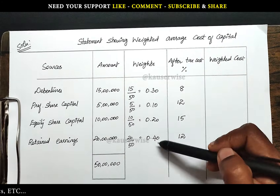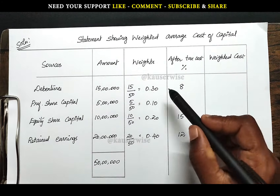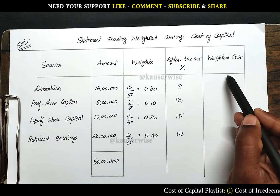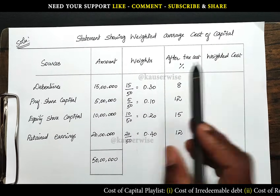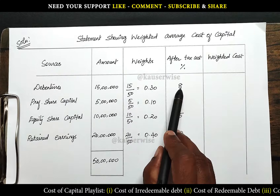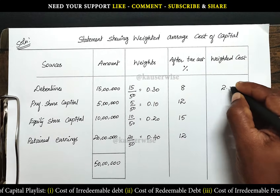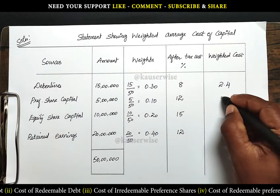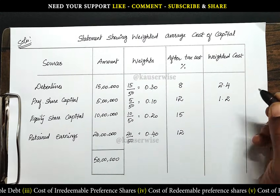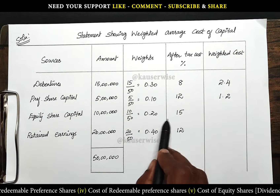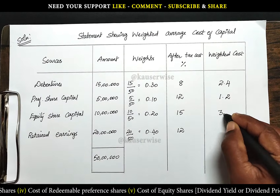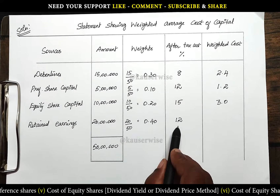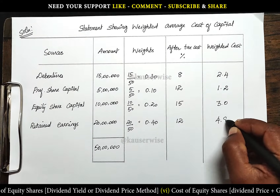After finding the weights of each and every component, multiply with the after-tax cost in order to get the weighted cost. So: 0.30 into 8 gives 2.4; 0.10 into 12 gives 1.2; 0.20 into 15 gives 3; and 0.40 into 12 gives 4.8.